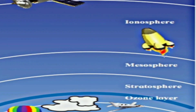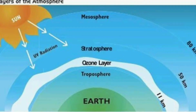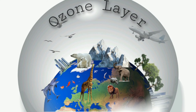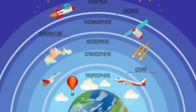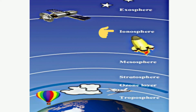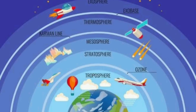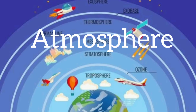The ozone layer absorbs UV rays and protects the living world from those harmful rays. It is because of the ozone layer that life on earth is possible. Beyond the stratosphere, up to a height of about 95 km from the earth, is the mesosphere. There are other layers too — ionosphere and exosphere — and all these layers together form the atmosphere.